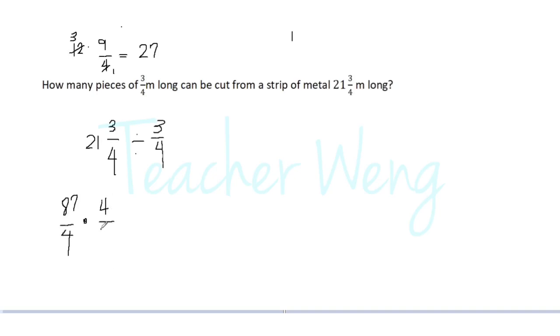So we have here four over three. This is the reciprocal. So here, we can divide four by four. We have four divided by four, so we have one.